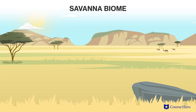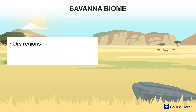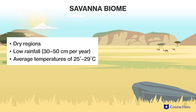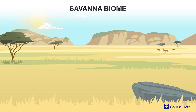Savannas are found generally near the tropics and their dry regions, receiving only 30 to 50 centimeters of rainfall a year. Savannas are warm year-round, with average temperatures ranging between 25 and 29 degrees Celsius. Plants in the savanna are mostly grasses and shrubs with some trees.